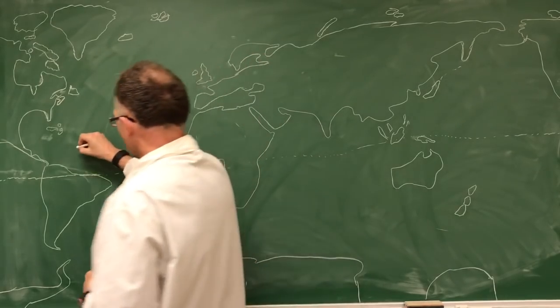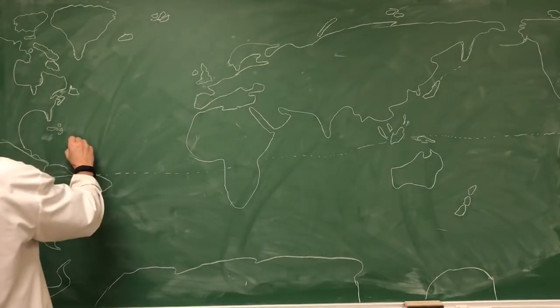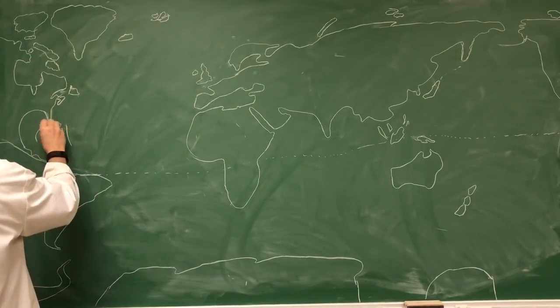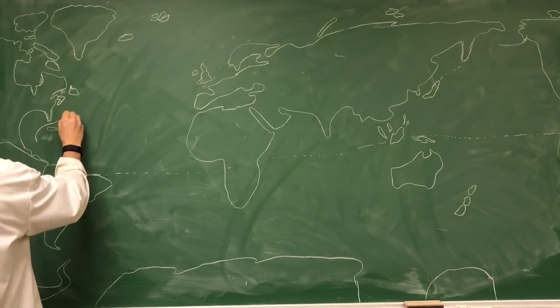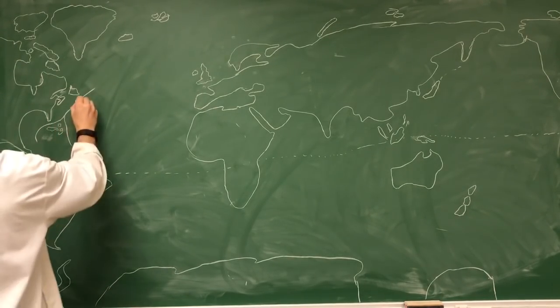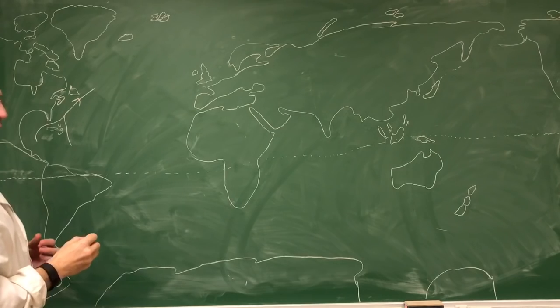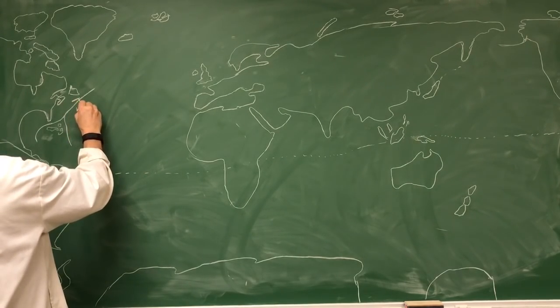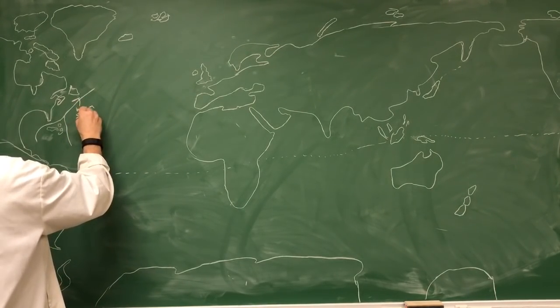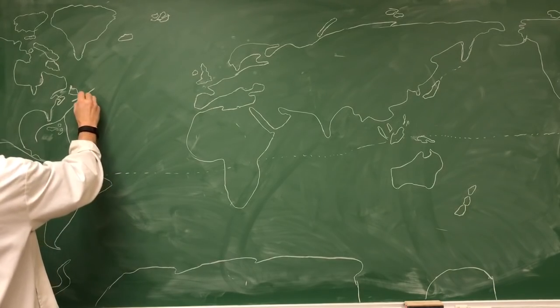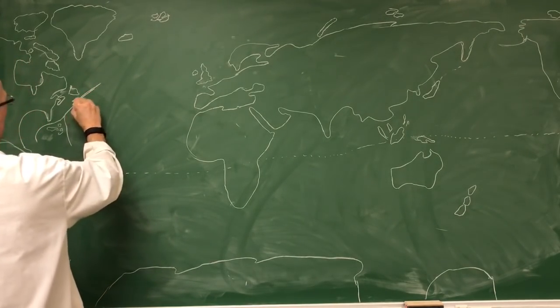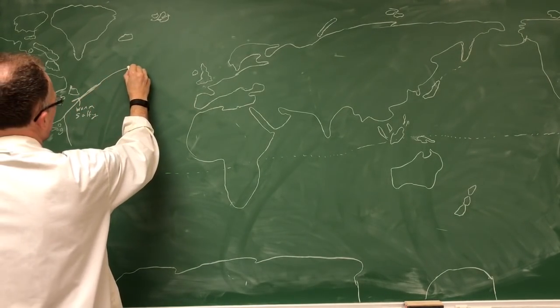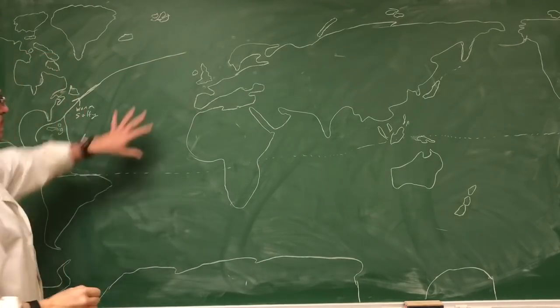So let's have some current coming up from here. We know what this is in North America. This is the Gulf Stream. It's very warm, very salty water. So it comes up here, vast amounts of it, and it goes across to Europe.